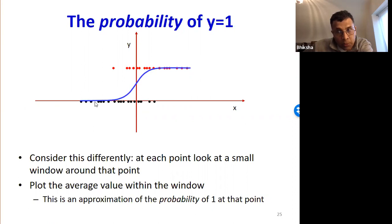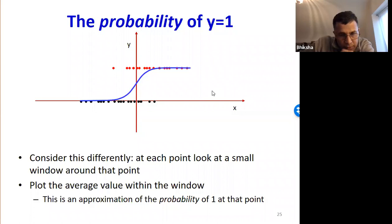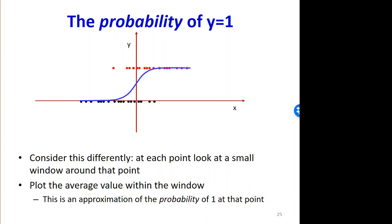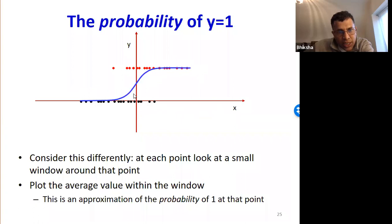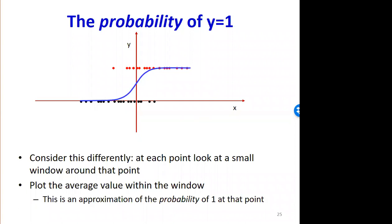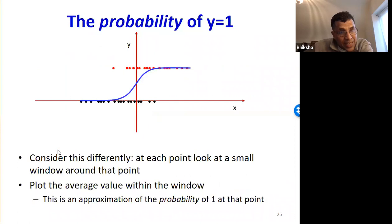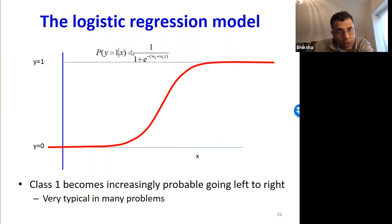At the extreme left, all of the training instances will have class value 0, so the average will be 0. As we go from left to right, first a few and then an increasing number of training instances are red with class value 1, so the average begins to increase from 0 and smoothly goes up to 1. Can anybody suggest a function that actually captures this shape? That's a sigmoid, right — the classic sigmoid. It's 1 over 1 plus e raised to minus an affine function of x.